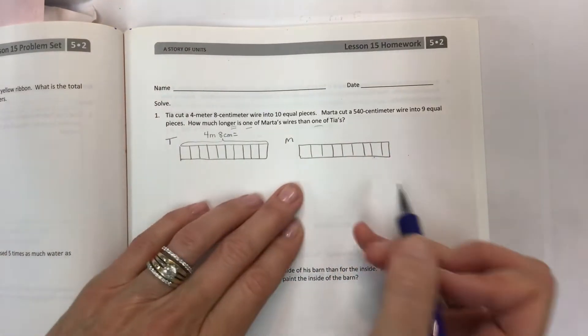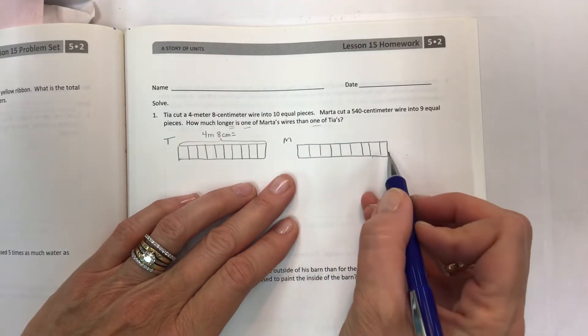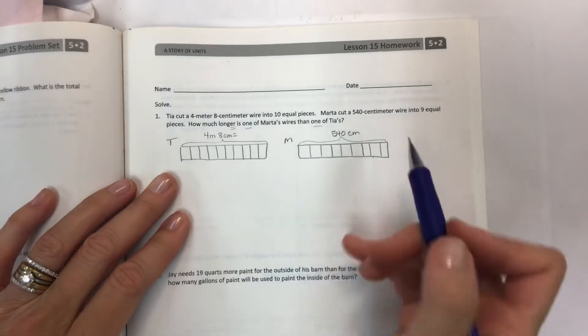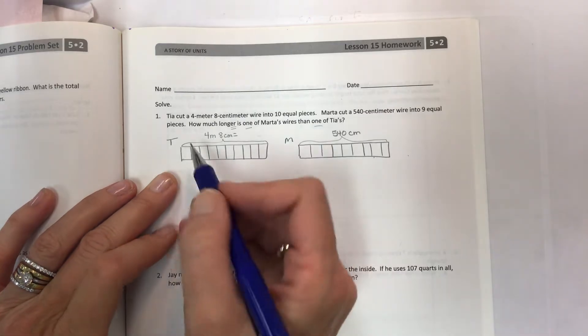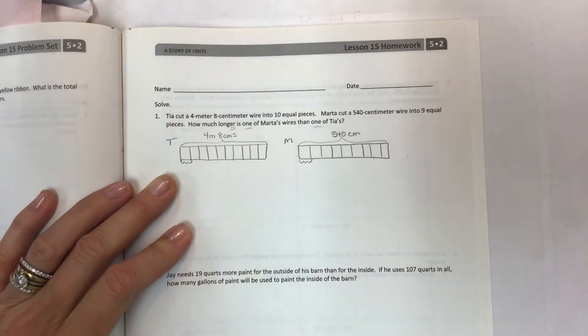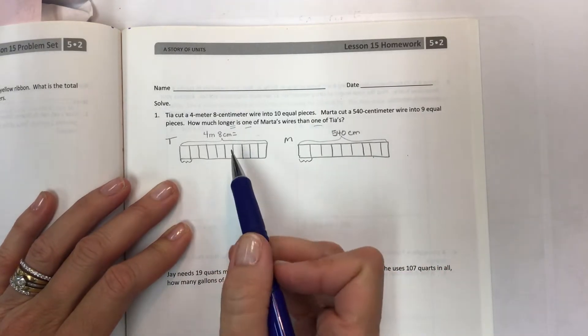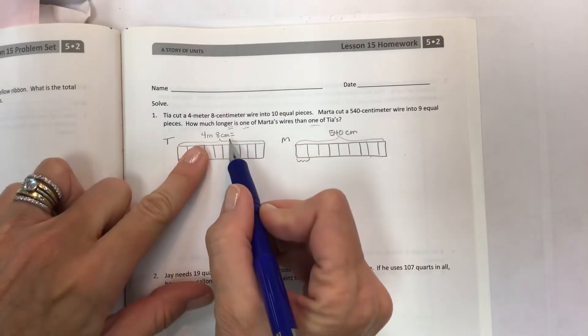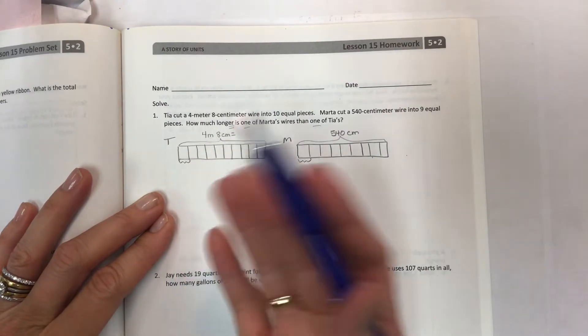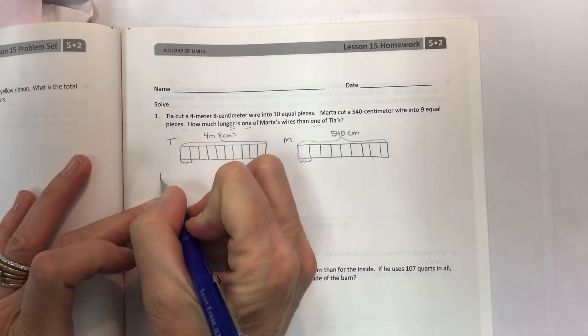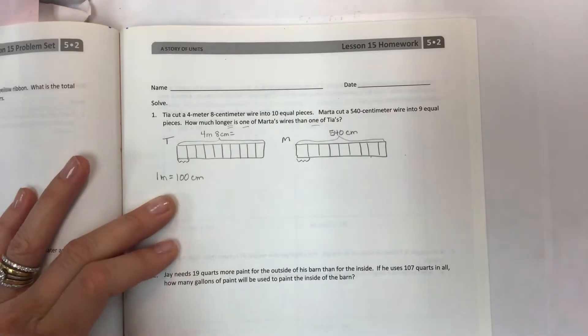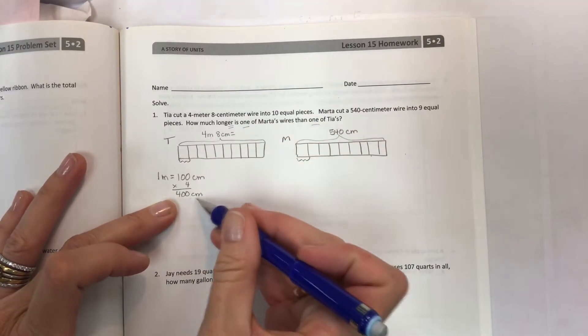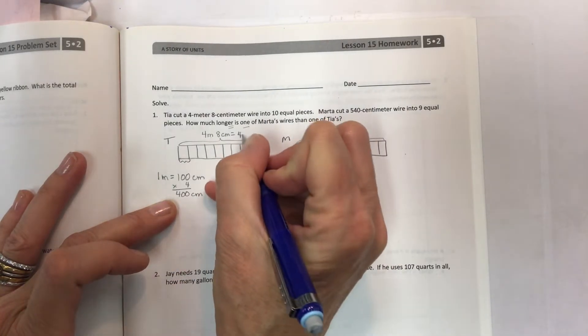And hers is 540 centimeters. So we can be very precise with this. We can always convert it later. So how do I figure out how much one of them is? Because this is what I need to know. And sometimes when you look at the picture it will give you a clue as to what to do. So taking the four meters and the eight centimeters, I want to make this exact. So how many centimeters are in a meter? And you might be remembering that one meter equals 100 centimeters. And so if you have four meters, that's going to be times four.